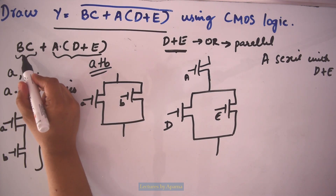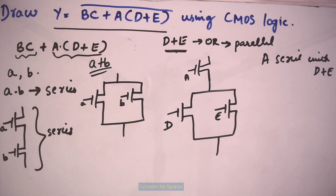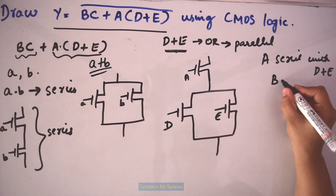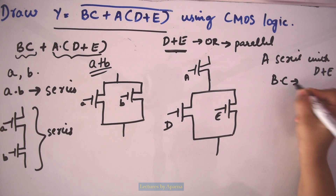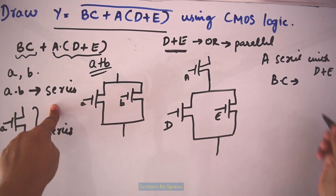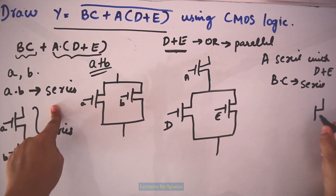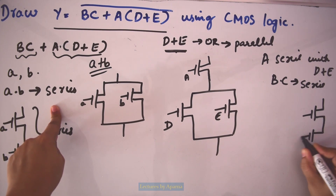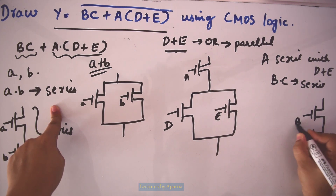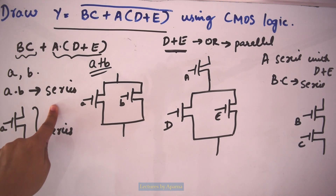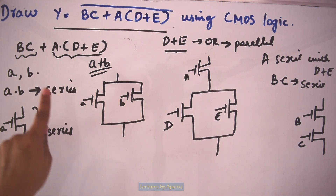The next term is BC. BC means it is an AND operation, so B and C will be in series. So I connect transistors B and C in series to implement BC.